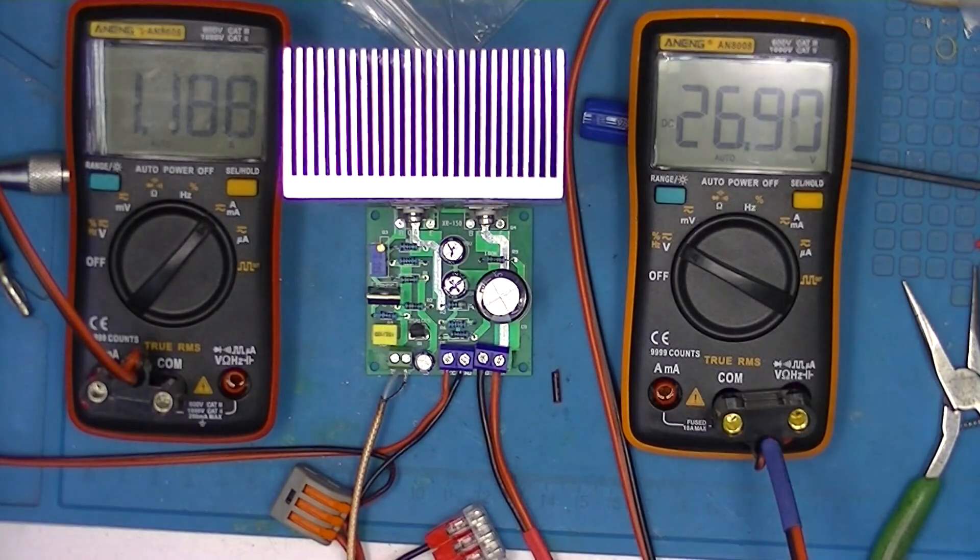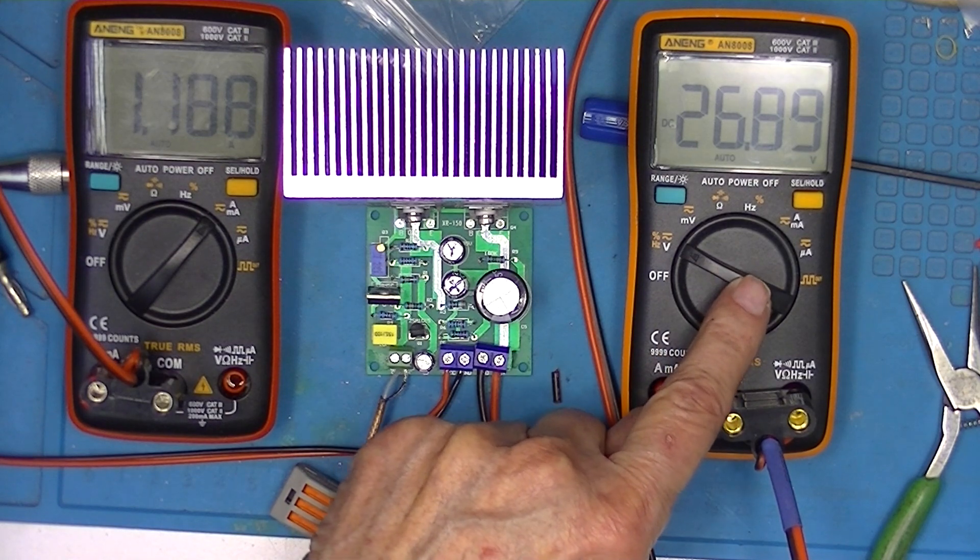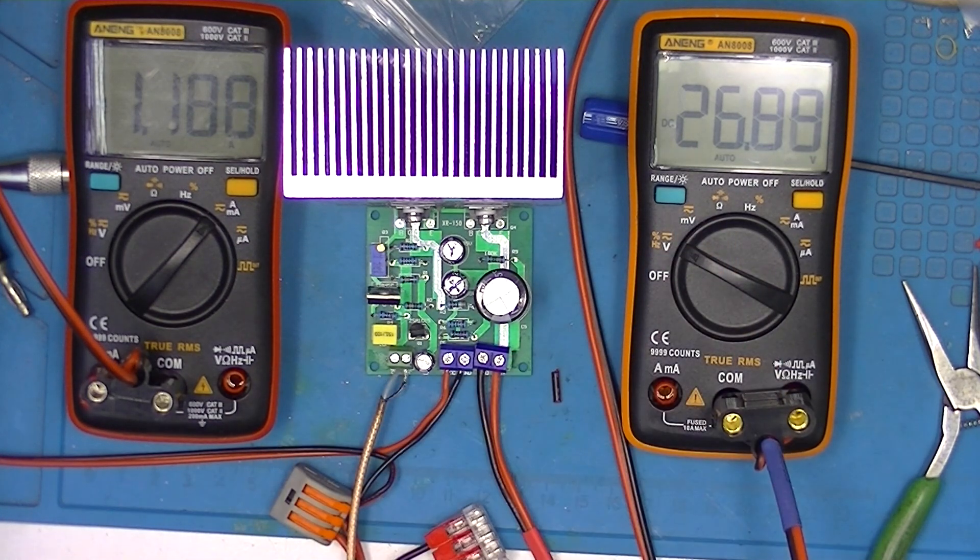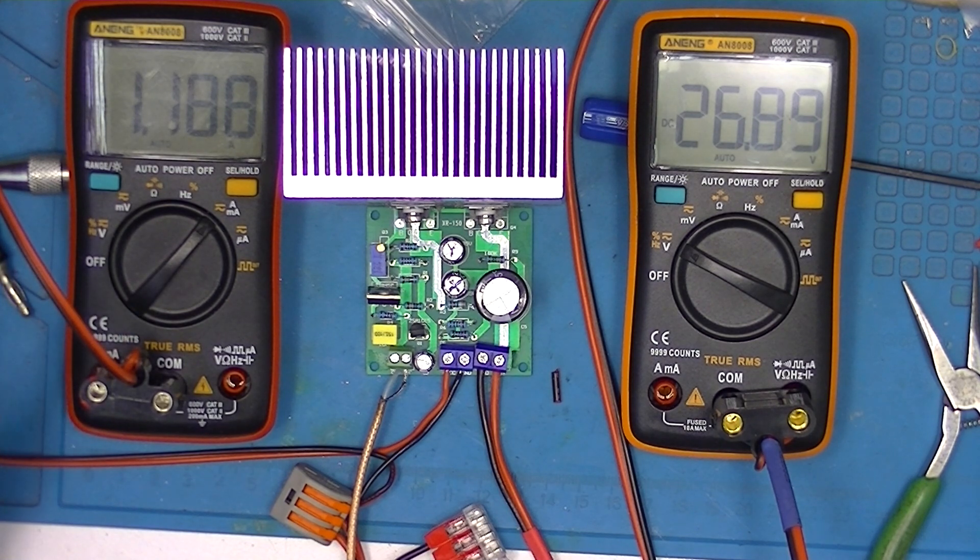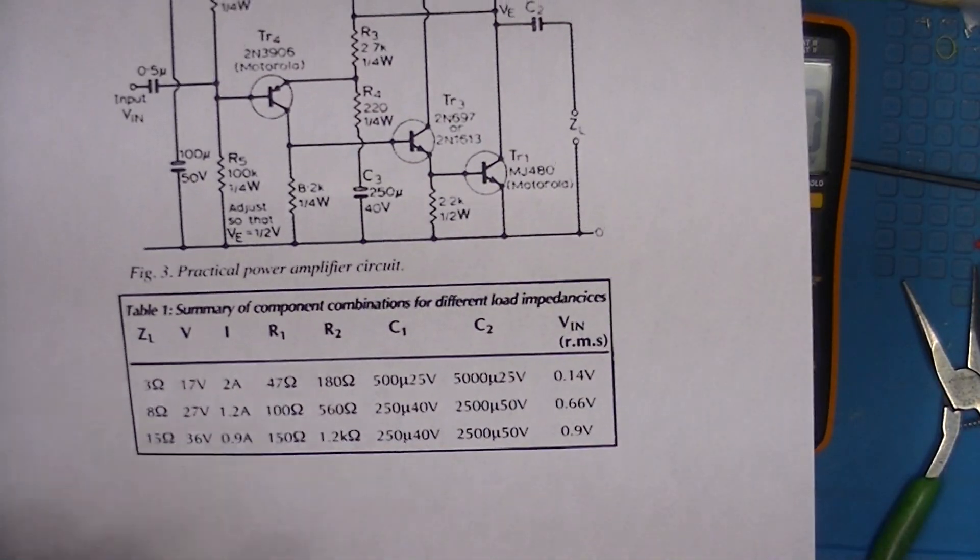I've set 26.89, that's okay, and 1.18, which is close enough to 1.2. I'm using a lambda regulated power supply. Like I said, there's an 8 ohm load here.